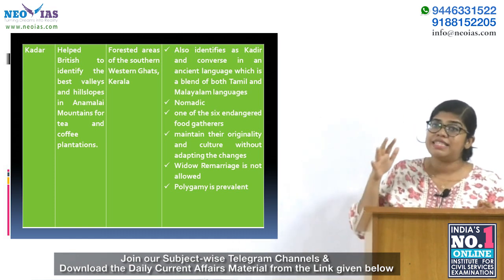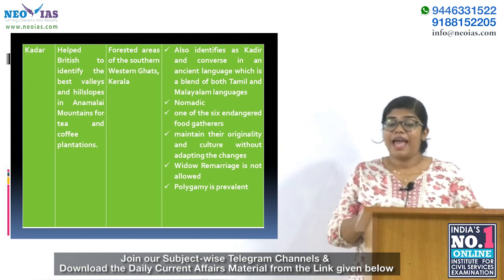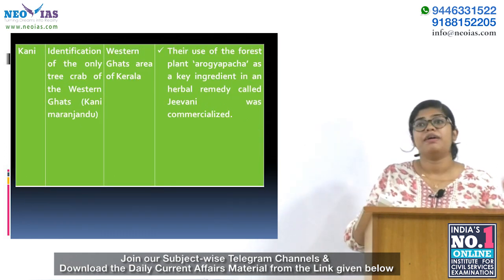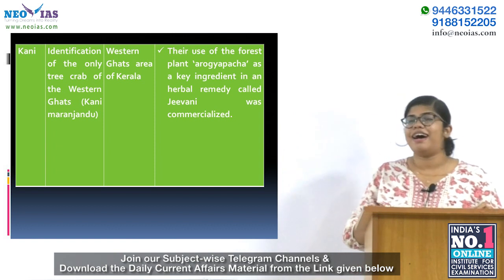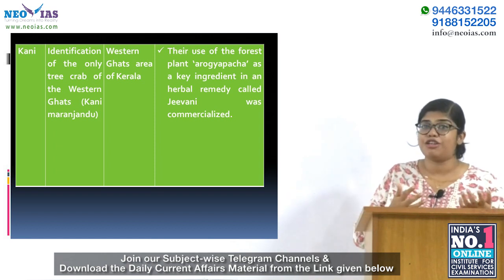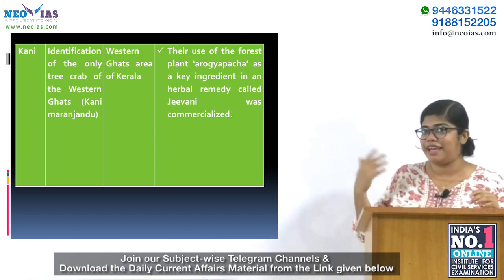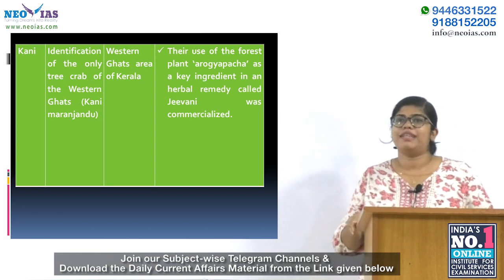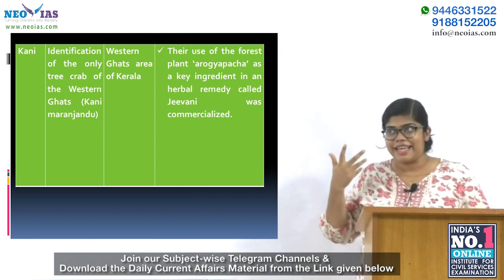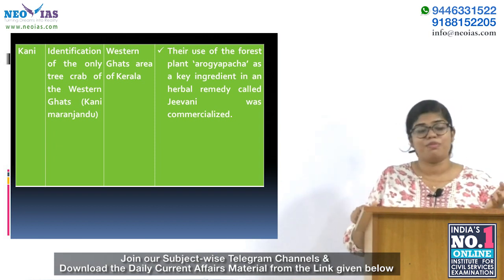The Kader tribe are one of the six endangered food gatherers in the country. They speak both Tamil and Malayalam, and polygamy is very prevalent in their community. The Kani tribe is from Kerala and actively participated in identifying the only tree crab of the Western Ghats, which was named Kani Maranjadu after their tribal name. They also use a forest herbal plant called Aarogyapaccha as a remedy for injuries and other problems.